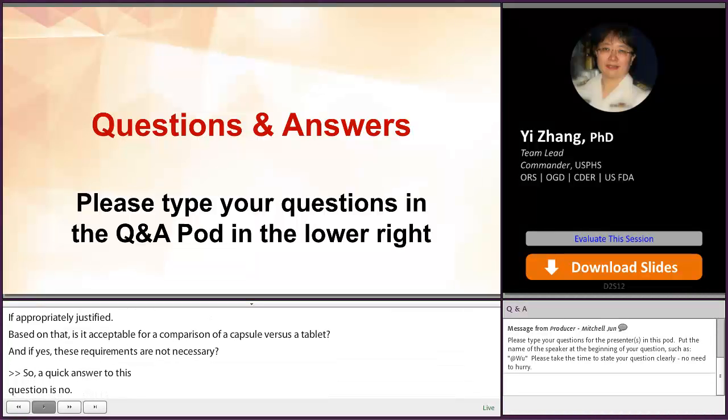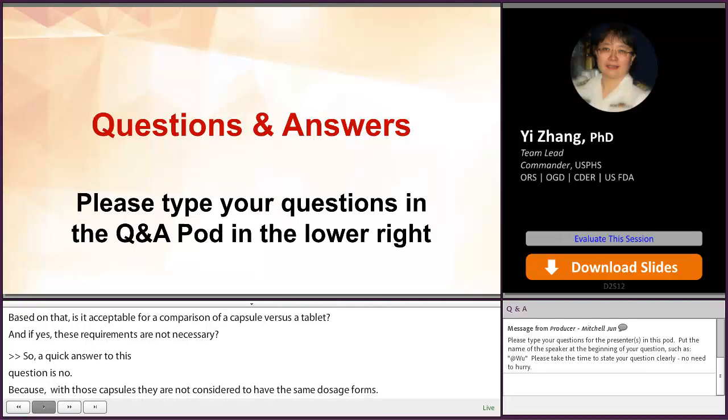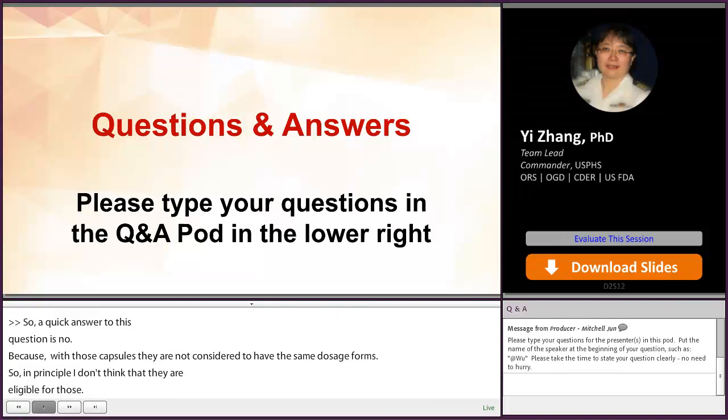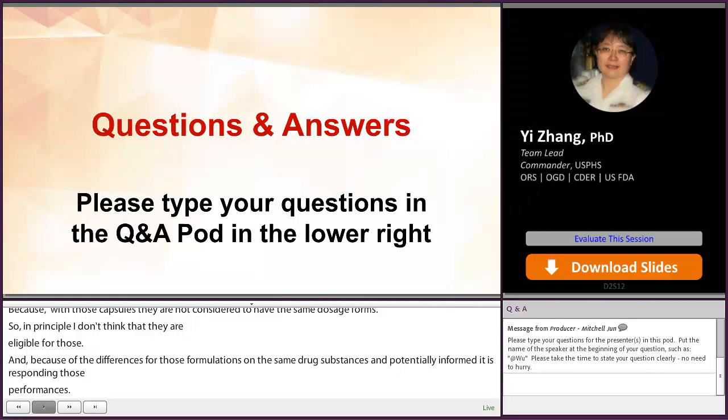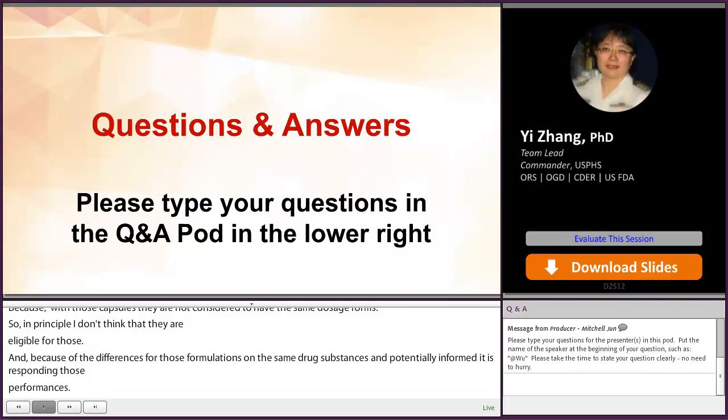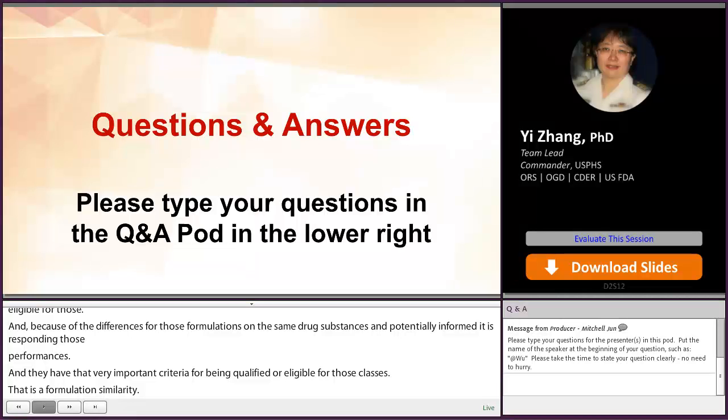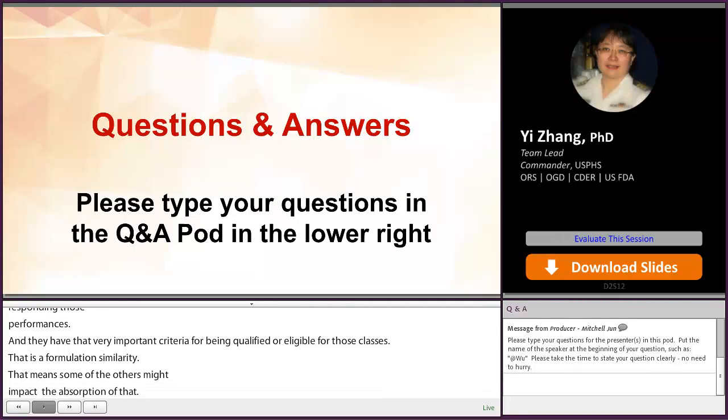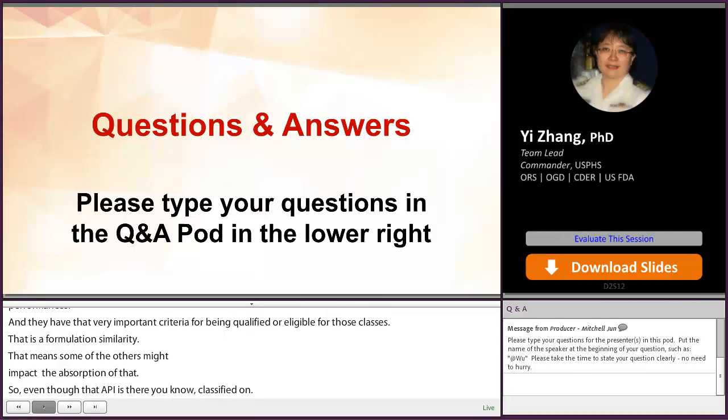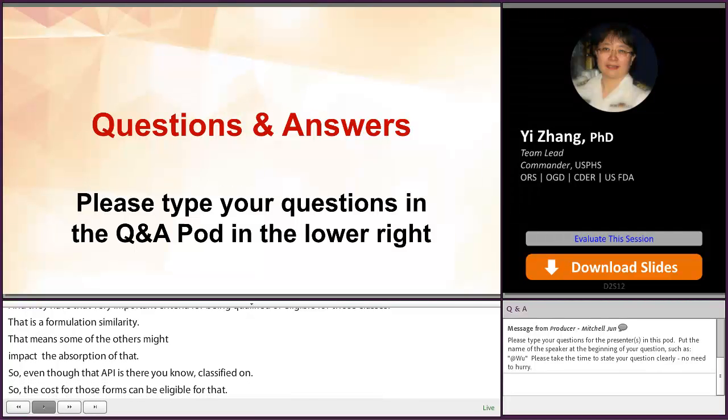So in principle, I don't think they are eligible for BCS-based biowaivers because the differences in the formulation of the same drug substance may potentially influence its corresponding in vivo performance. If we can recall from my presentation, one of the very important criteria for being qualified or eligible for BCS Class III waiver is formulation similarity. So that means some of the excipients might impact the absorption of the API. So even though that API is classified, the cross between different dosage forms cannot be eligible for BCS waiver. I think in this case, I would recommend 505B2 pathway probably should be the most appropriate one.